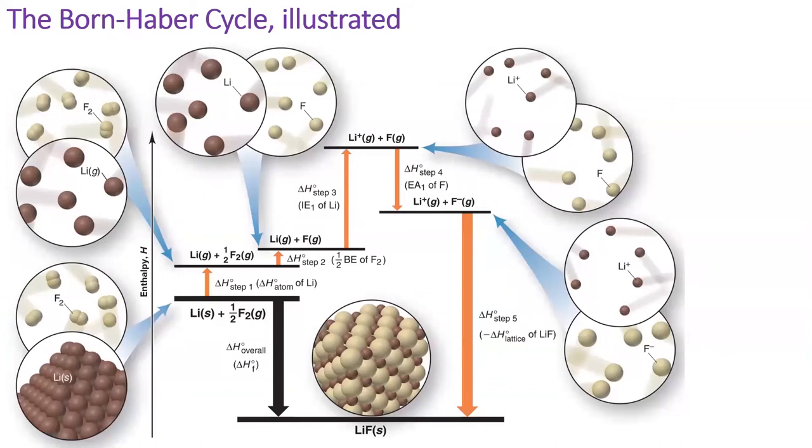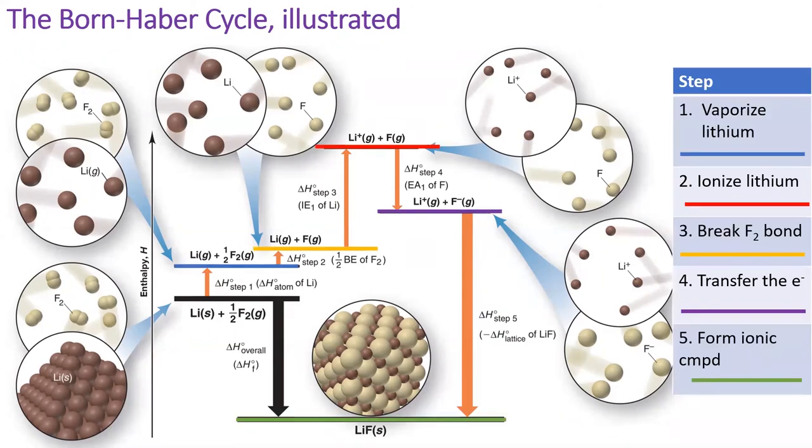This diagram places each of the five steps onto an energy level diagram. After I color code each step, we can see that the first three steps are moderately endothermic and the last two steps are exothermic, especially the formation of the ionic bond, which is enormously exothermic.